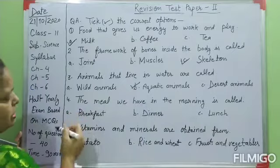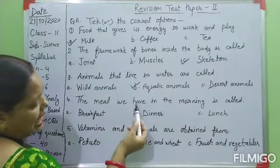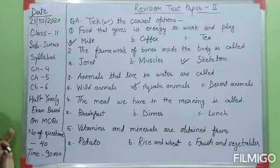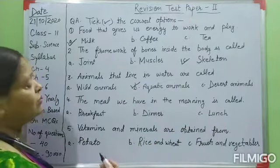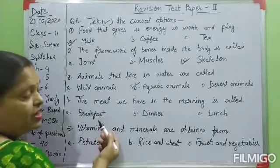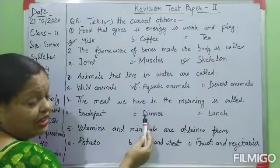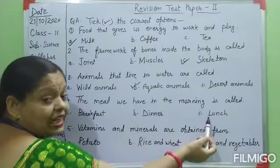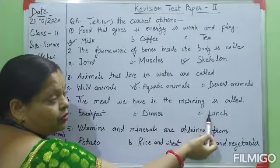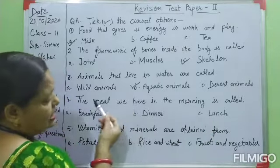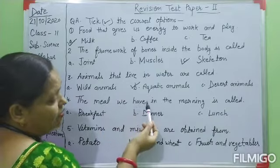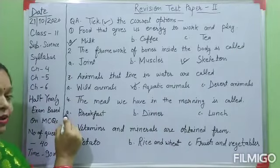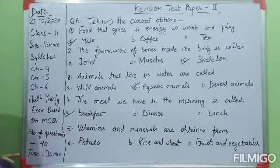Number four: the meal we have in the morning is called. The first meal we take in the morning is breakfast. Dinner is the third meal of the day — we take dinner at night. Lunch is the second meal of the day. That's why, according to this sentence, the right answer is breakfast. You have to choose that option.